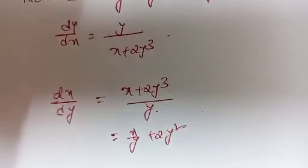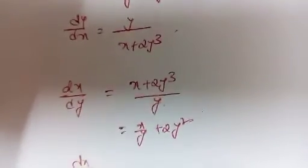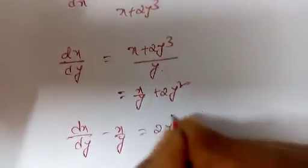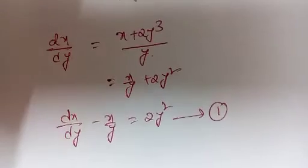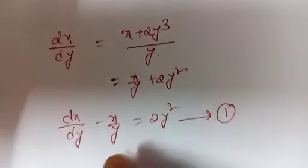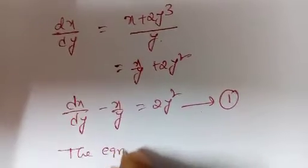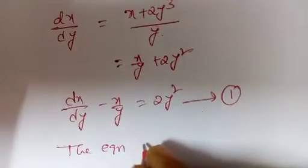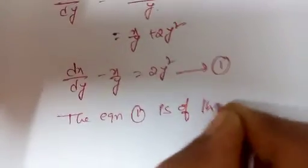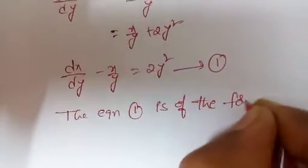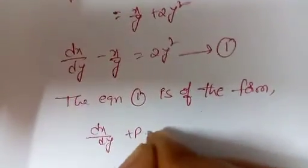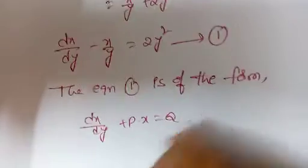So then: dx/dy − x/y = 2y². Take this as equation number 1. This equation is of the standard linear form dx/dy + P·x = Q.